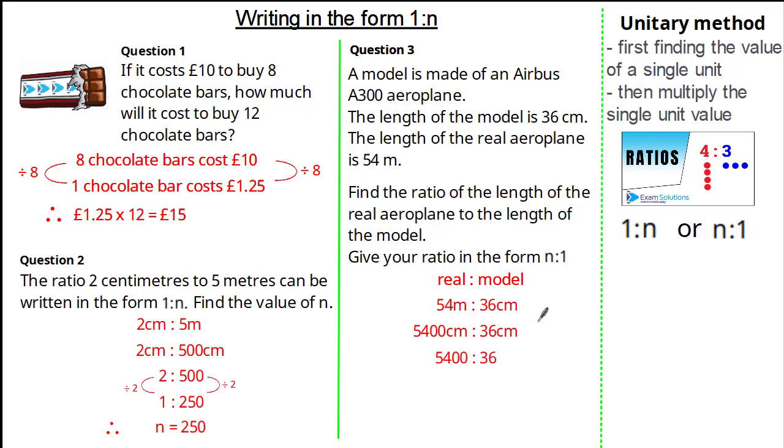Because the question wants us to find the second part of the ratio being 1, we simply divide both sides by 36. This gives us 150 to 1. Therefore, the value of n must be 150.